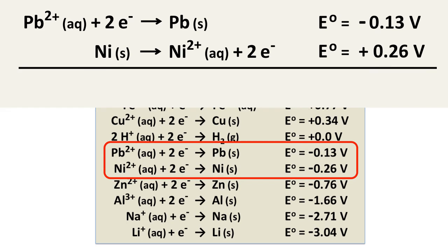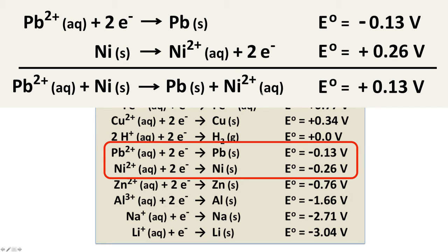When we combine our two half reactions to get the overall reaction, two electrons gained, two electrons lost, those cancel. So we have Pb²⁺ + Ni → Pb(s) + Ni²⁺. And the overall potential for this electrochemical cell at standard conditions is +0.13 volts.